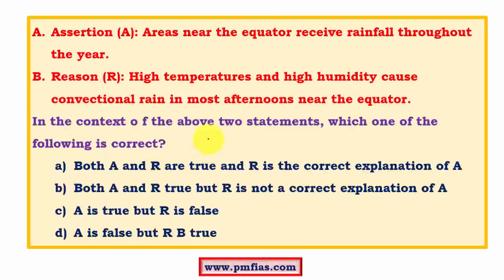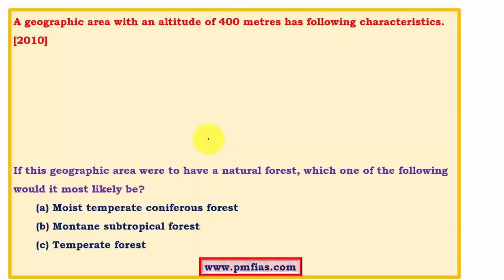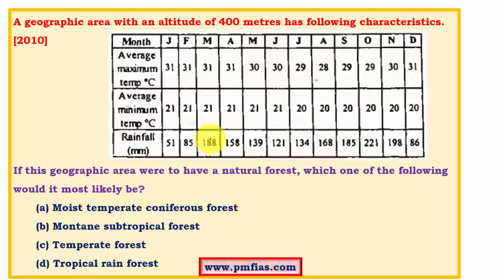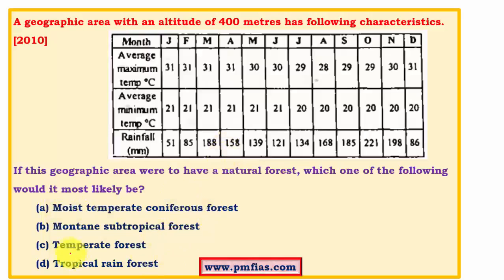The answer is that both A and R are individually true and R is the correct explanation of A. A similar question — 'areas near the equator receive rainfall throughout the year; high temperatures and high humidity cause this' — was asked in another year as well. Then there's a question about 'a geographic area with an altitude of 400 meters with certain climatic characteristics' — this type of question requires knowledge of various climatic regions like temperate forest, mountain subtropical forest, etc., which we'll address when we cover those concepts.